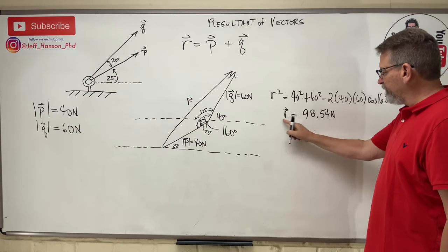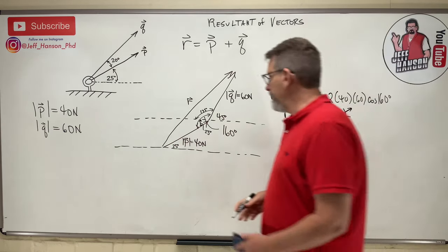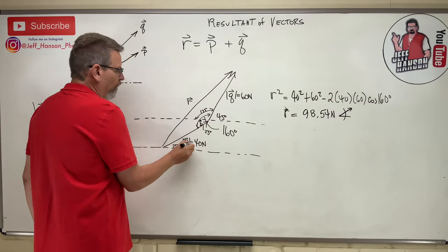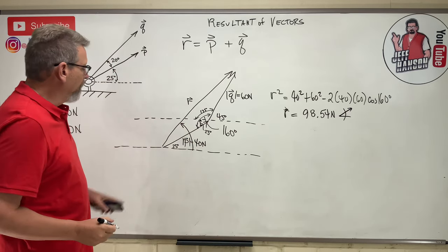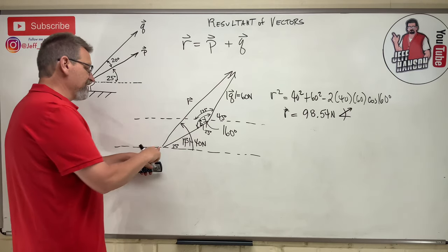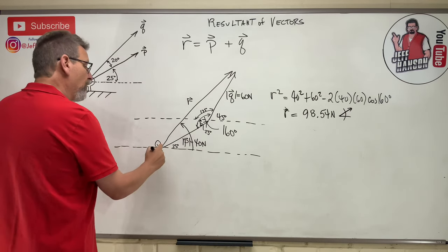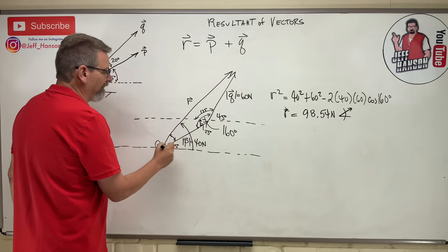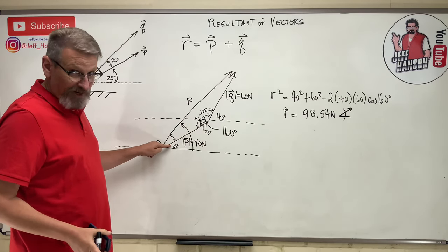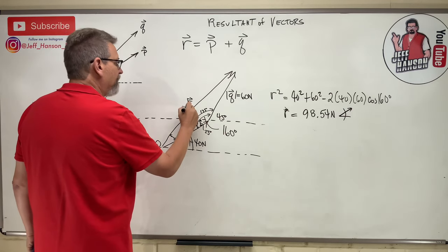That's how big vector R is — that's a magnitude, not a full vector. I need an angle too. The angle I need is from horizontal. Looking at the triangle, the angle associated with the opposite side of 60 Newtons is angle Q. But angle Q is just this small piece, and I need to add 25 to it to get from the floor up. I know R is 98.54.